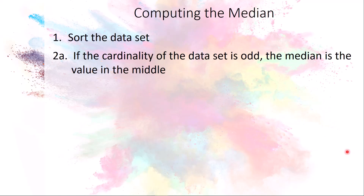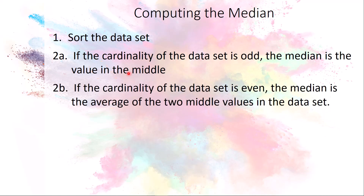Here is the procedure: sort the data set, either by hand or using your calculator. If the cardinality — the size — of the data set is odd, the median is the number in the middle. If the size is even, the median is the average of the two numbers in the middle.